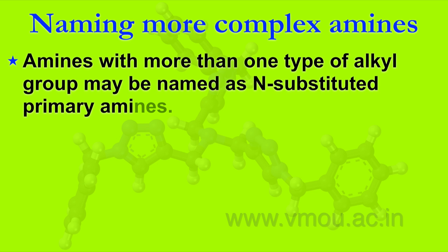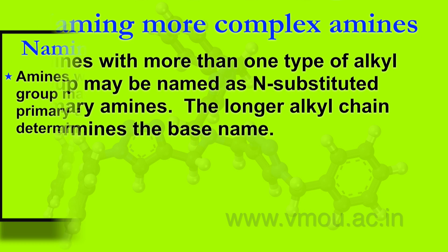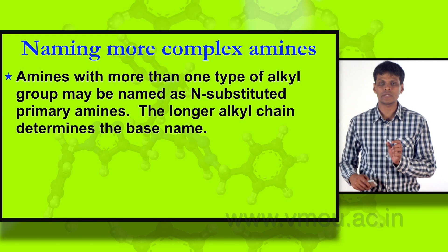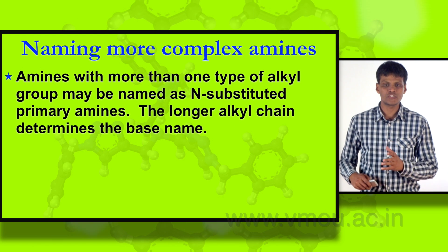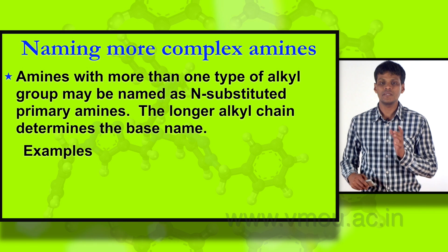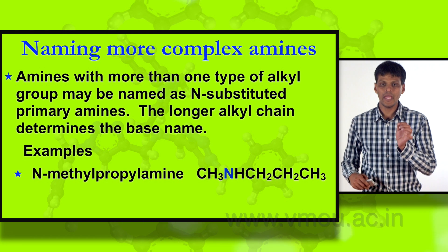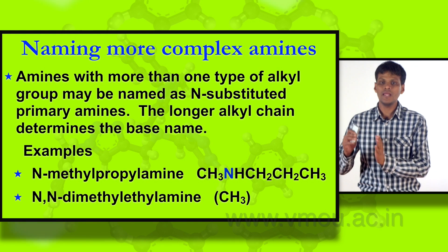For some complex amines, amines with more than one type of alkyl group may be named as N-substituted primary amines, and the longer alkyl chain determines the base name. The longer alkyl chain determines the base name — this point is very important. An example of this complex amine is N-methylpropylamine.